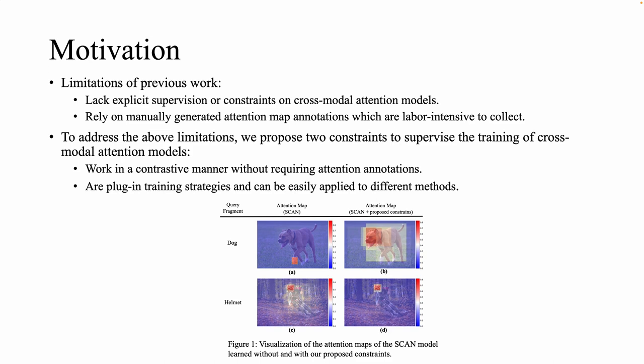In Figure 1C, when using helmet as the query, SCAN assigns large attention weights to the irrelevant human body and background areas. Recent work solves the problem by using annotated attention maps to supervise the training of attention models. However, annotating attention is labor-intensive.